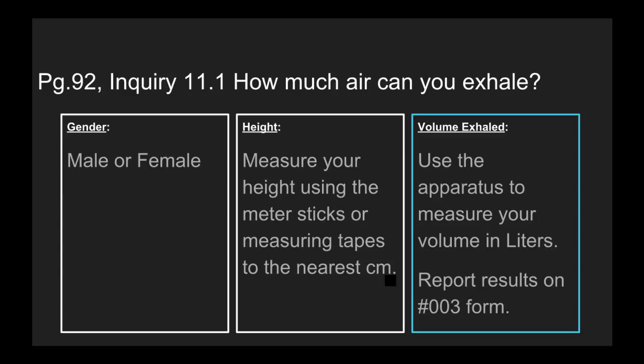Here's what you're reporting on the form: whether you're male or female — your genetic maleness or femaleness at birth. Measure your height in centimeters and report that as the second question. And then the third is, after you've taken an average of three trials in exhaled volume, calculate the average and report it. And that's our day.